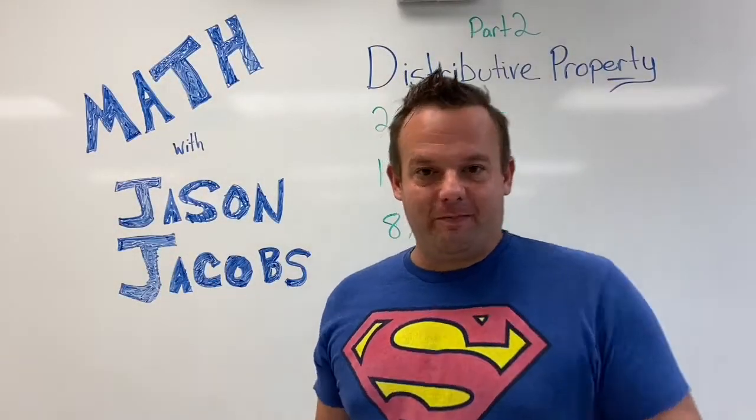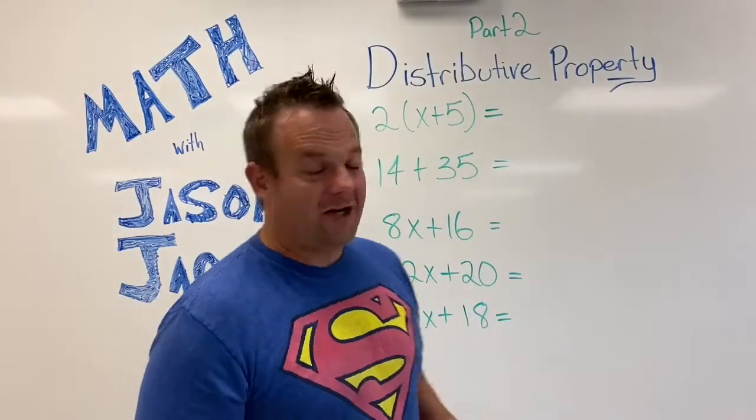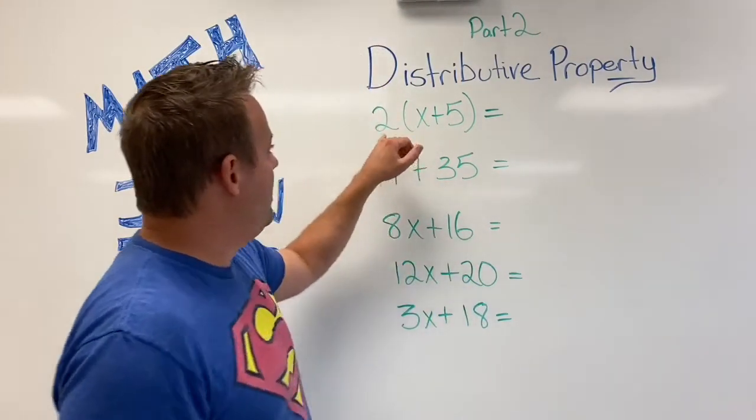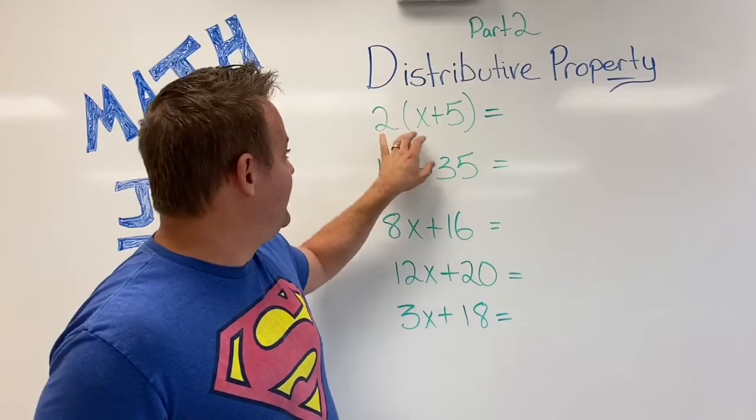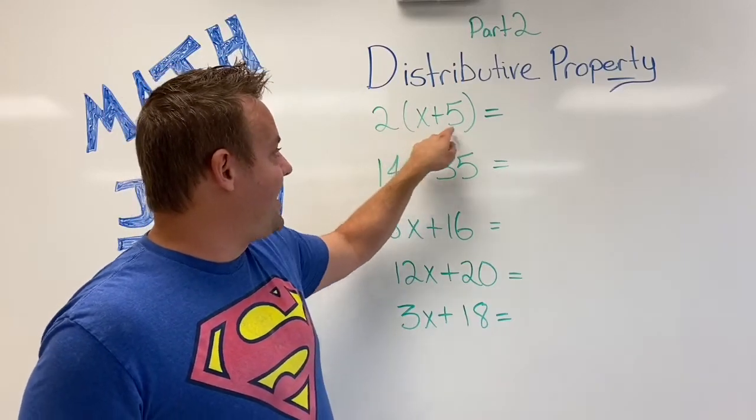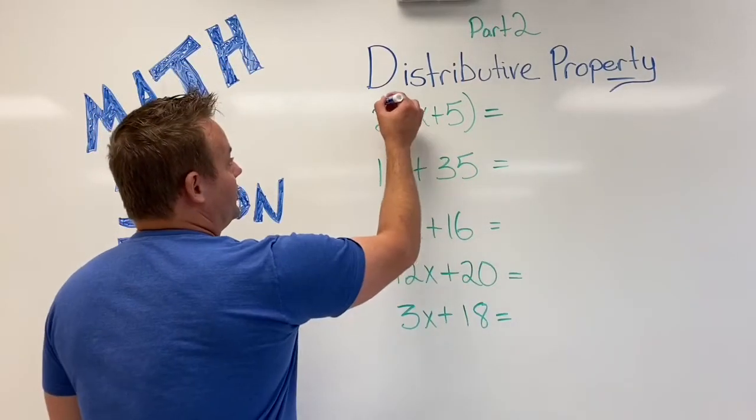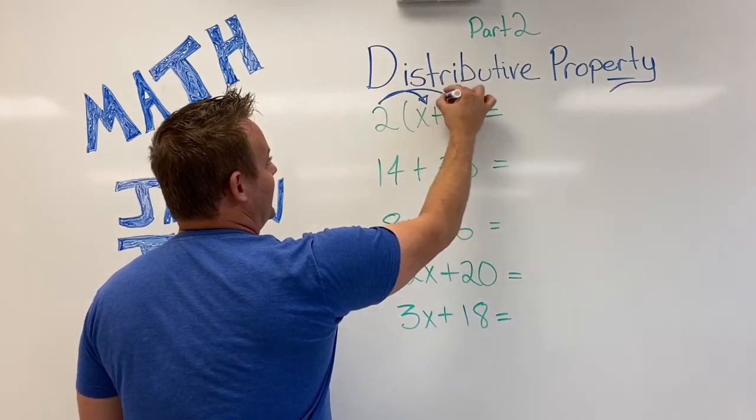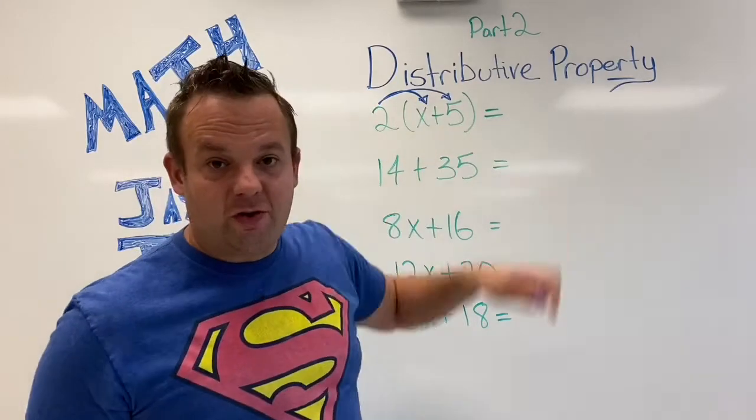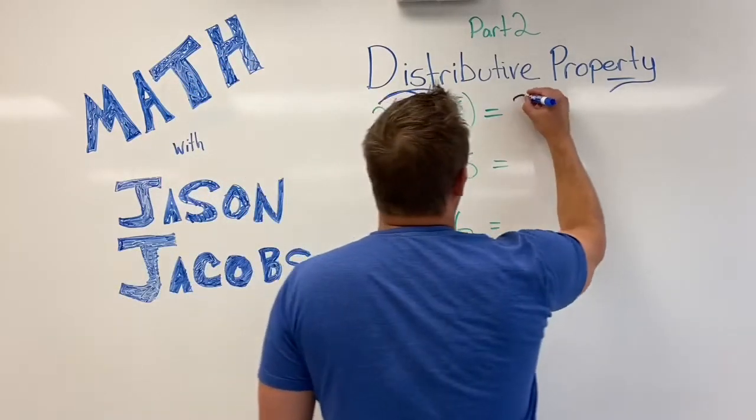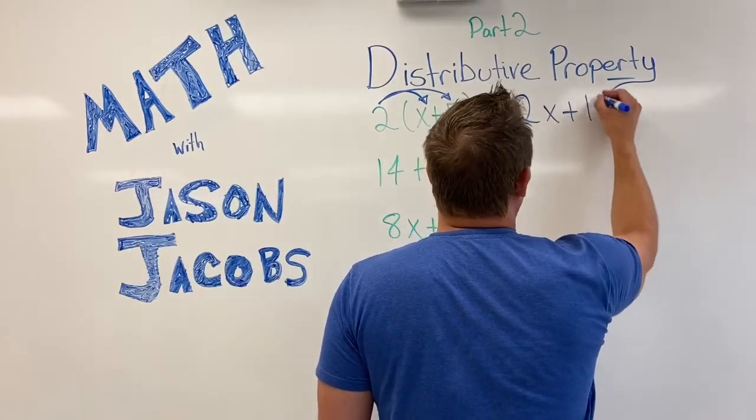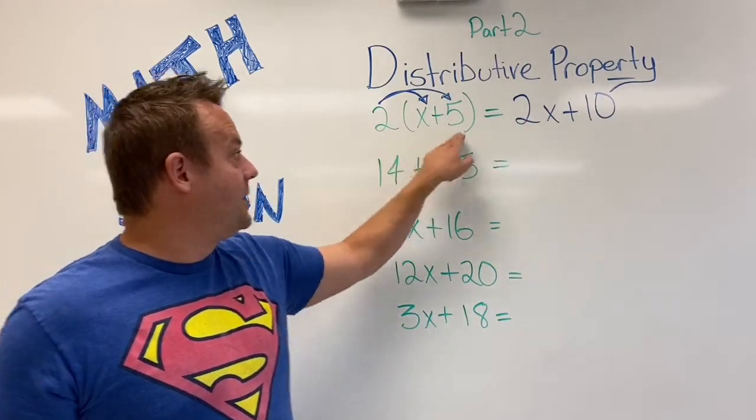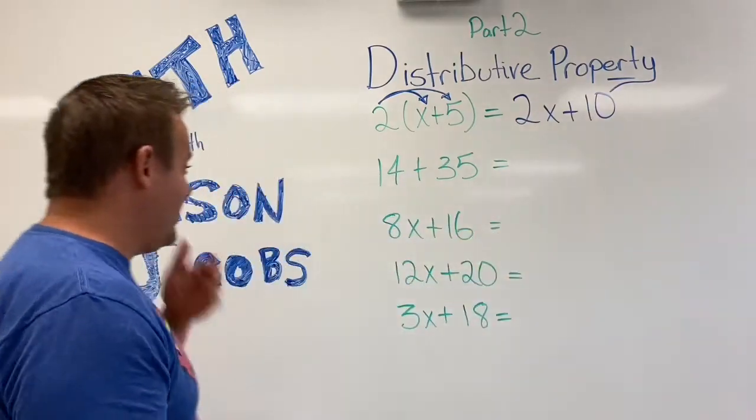Distributive property, part 2. Hey, this is part 2 to learning all about the distributive property. If you missed part 1, I'll quickly show you. We have the distributive property over addition here. 2 times the quantity X plus 5. So we would go 2 times X plus 2 times 5. You see how the 2 distributes all the way over. So we have 2X plus 10. 2 times X is 2X, 2 times 5 is 10.